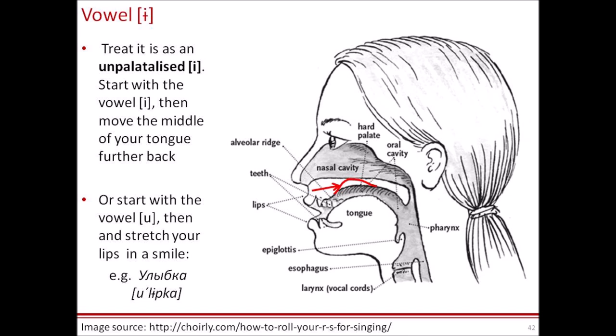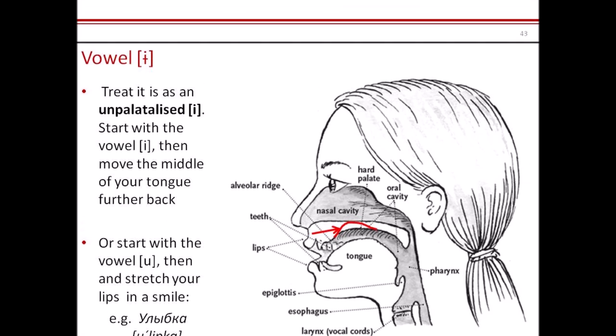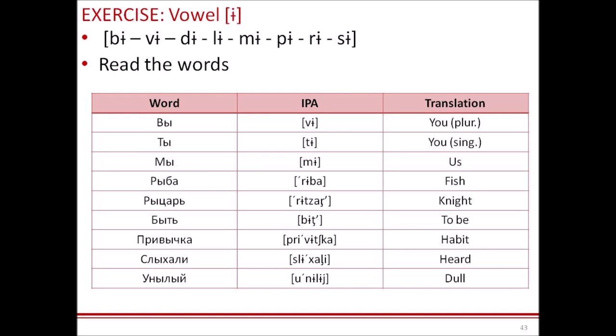Usually, in singing, it is easier to produce this sound than in speech, because in singing we can modify vowels to produce better quality sound. We drop our jaw a little bit, and it comes out something in the middle between Y and E. Let's practice the vowel Ы with separate syllables first: БЫ, ВЫ, ДЫ, ЛЫ, МЫ, ПЫ, РЫЙ, СЫ. And with actual words: ВЫ, ТЫ, МЫ, РЫБА, РЫЦАРЬ, БЫТЬ, ПРИВЫЧКА, СЛЫХАЛИ.